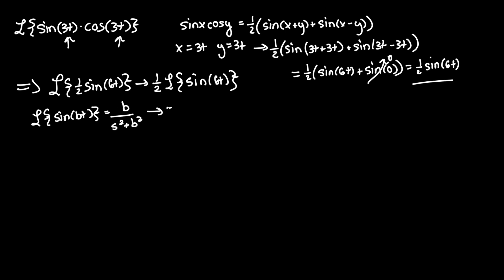And for our case we have Laplace of sine 6t, where b equals 6. So that becomes 6 over s squared plus 6 squared, or 36, its equivalent.